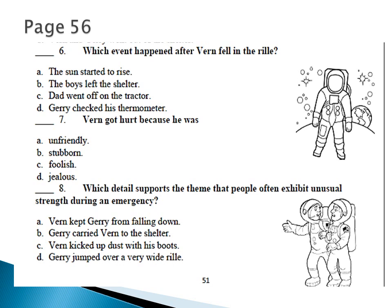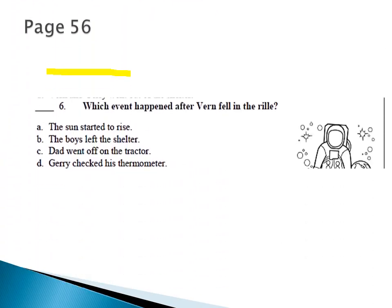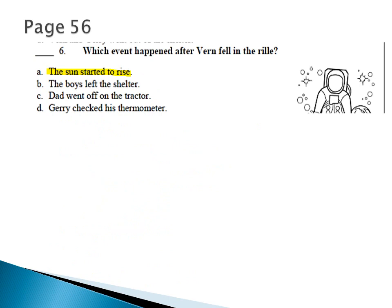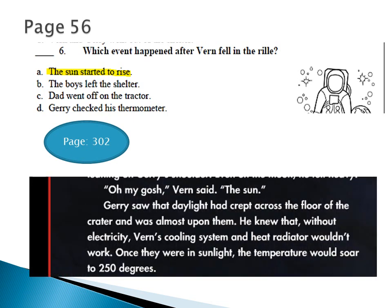Number seven: Verne got hurt because he was — what do you expect? And which detail supports the theme that people often exhibit unusual strength during an emergency? For number six — which event happened after Verne fell in the rille — we find on page 302 in your textbook: 'Oh my gosh,' Verne said. The daylight had crept across the floor of the crater and was almost upon them. Without electricity, Verne's cooling system and heat radiator wouldn't work, and the temperature would soar to 250 degrees.